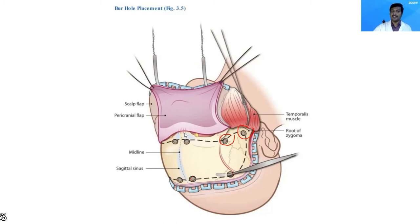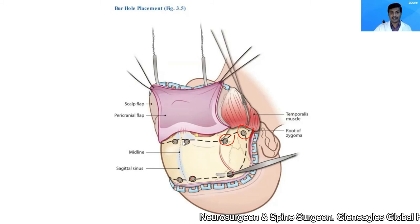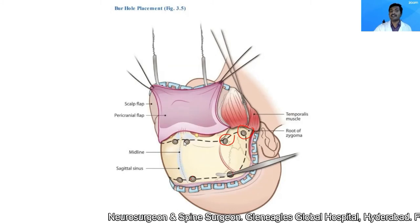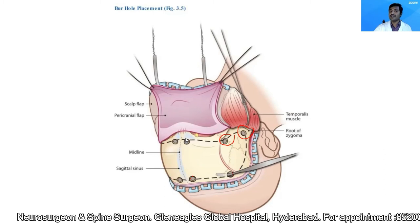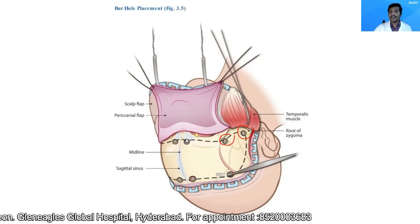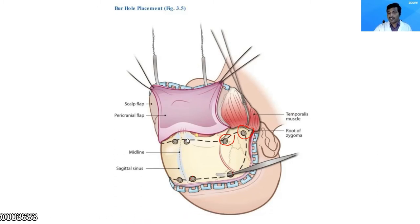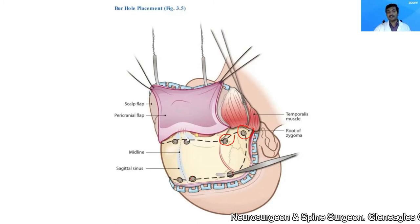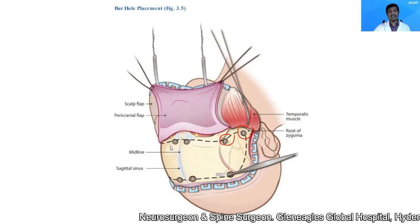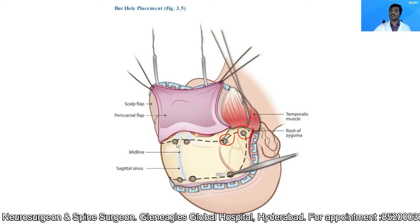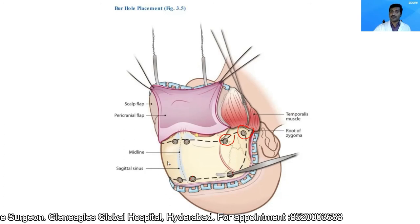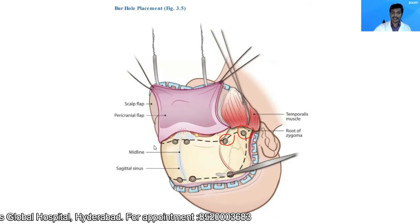These two anterior burr holes may enter the frontal sinus. If they do, immediately remove the mucosa from the frontal sinuses and pack them with muscle, fat, or Betadine-soaked Gelfoam. All instruments that have entered the frontal sinus should be discarded and replaced with a new set. After placing burr holes on either side, place the midline burr holes last.